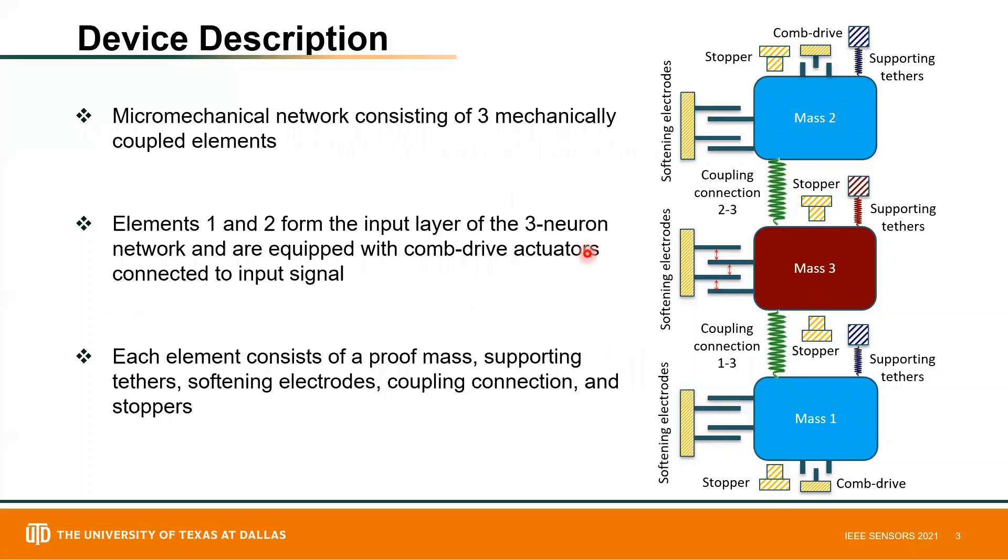The MEMS network consists of three mechanically coupled elements. Each element consists of a proof mass, supporting tethers, softening electrodes, coupling connections, and stoppers.